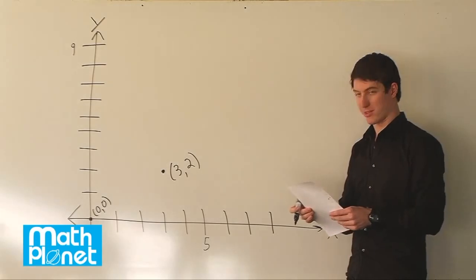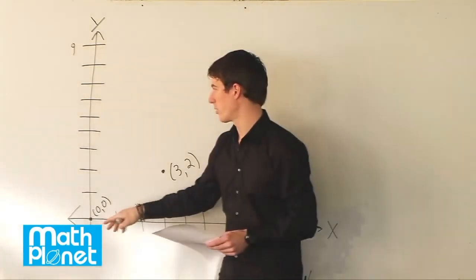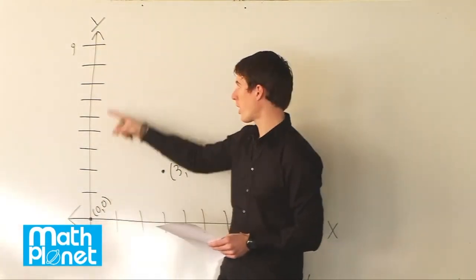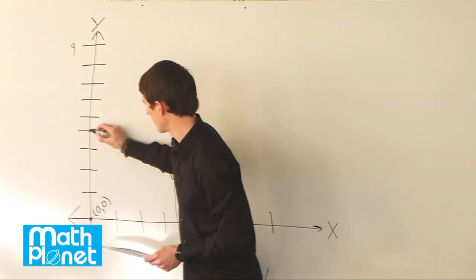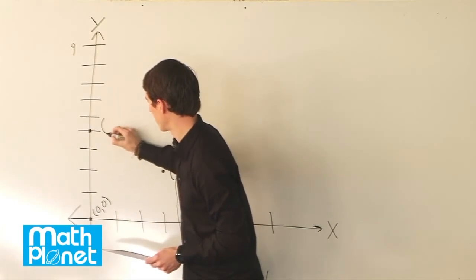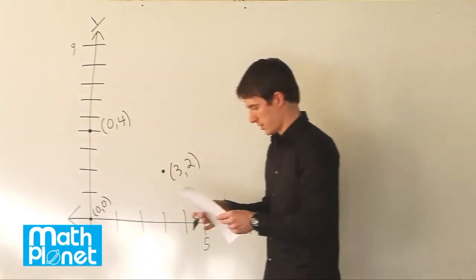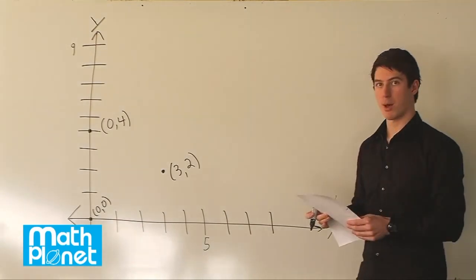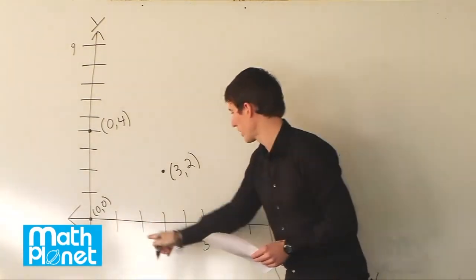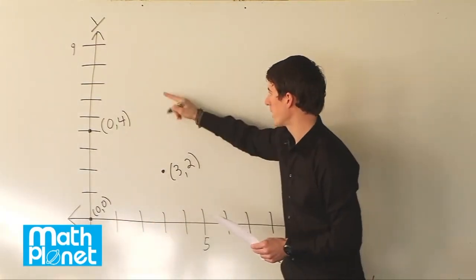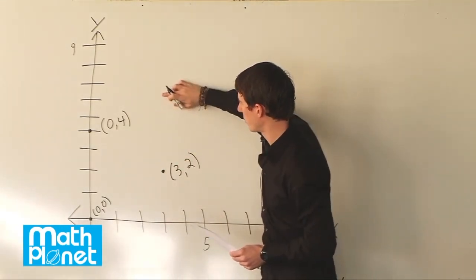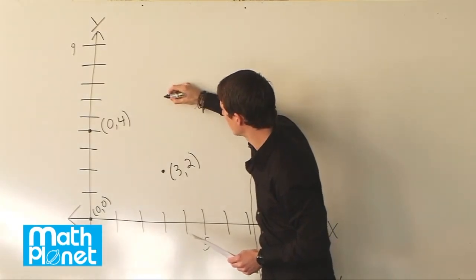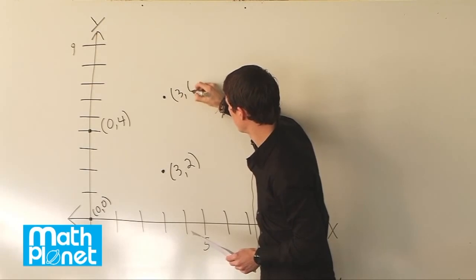Okay, next we have 0, 4. So x is 0 and y is 4. So we're on the y axis here. So 1, 2, 3, 4. So we're right here. The point 0, 4. Fourth we have 3 comma 6. So x is 3 again. And now y is 6. So we're at the same value of x here, but we're up 2 points from this one. So we have it at right about here. So that's the point 3 comma 6.